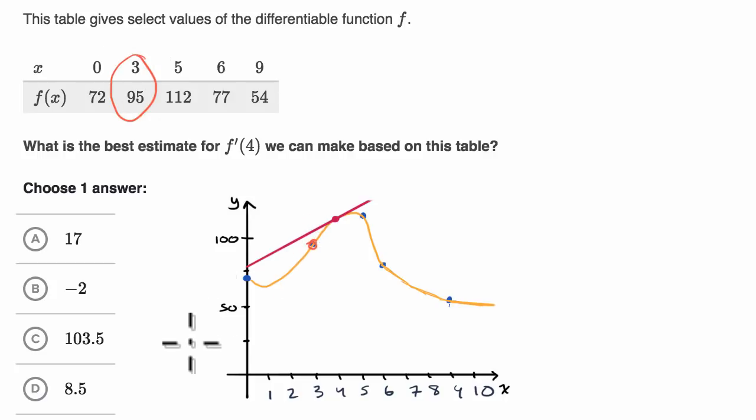Let me do this in another color. So three comma 95, that is that right over there. And they also give us five comma 112. That is that point right over there. And so what we could do, we could say, well, what is the average rate of change between these two points? Another way to think about it is what is the slope of the secant line between those two points? And that would be our best estimate for the slope of the tangent line at x equals four.